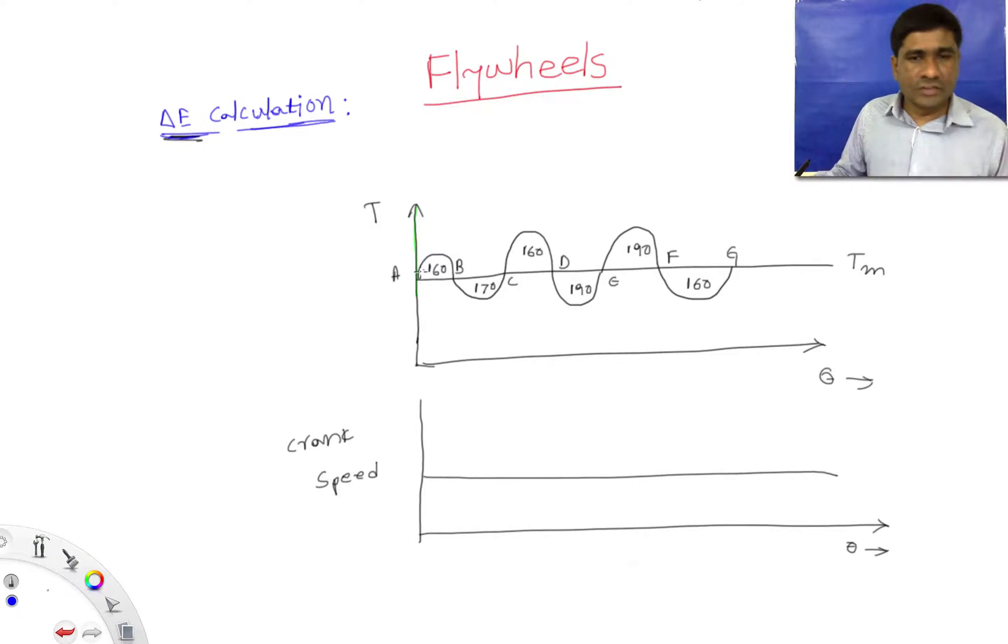So this is the multi-cylinder engine and our theta diagram is given like this. This is point A and B, and energy is fluctuating around the mean torque. We have already seen that E is proportional to omega square.